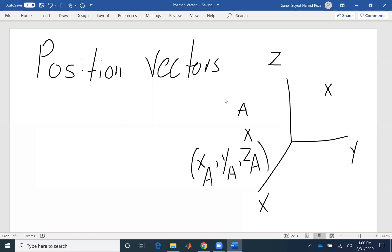Point B similarly has three coordinates: x, y, and z. And this vector is our position vector connecting point A to point B, and we call it RAB.